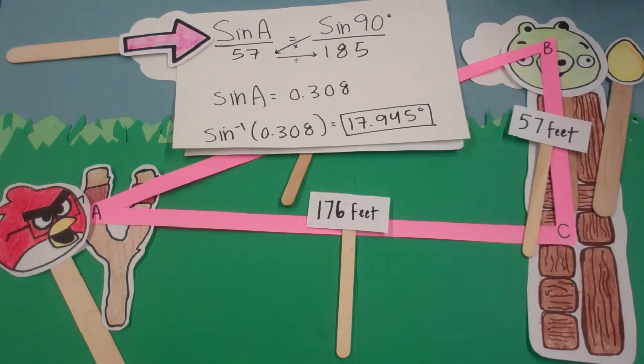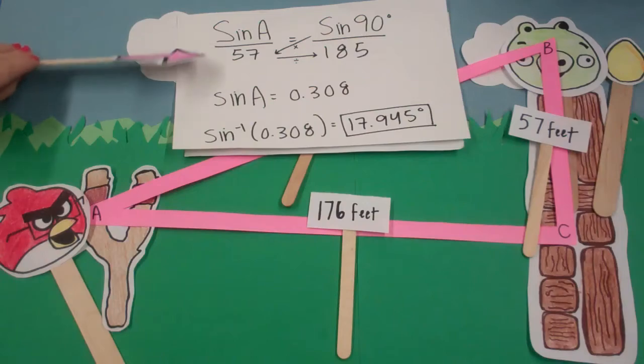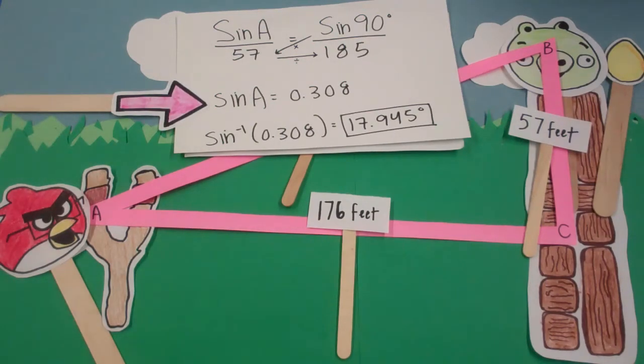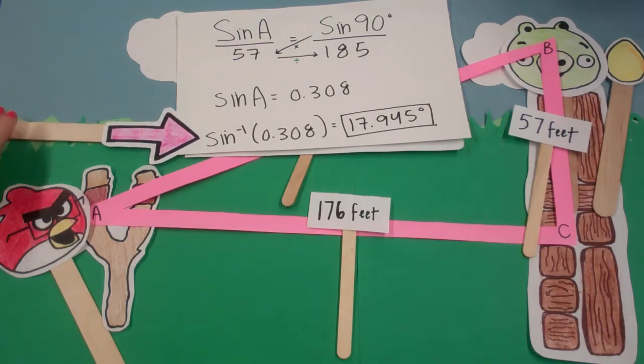Now the equation reads sine of A is equal to 0.308. To find what A equals, the Angry Nerd takes the inverse sine of both sides. Pulling out his trusty calculator, the Angry Nerd gets 17.945 degrees, exactly what he got by using the tangent property.